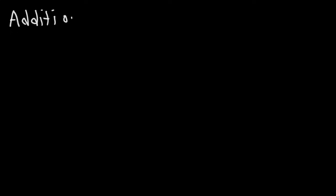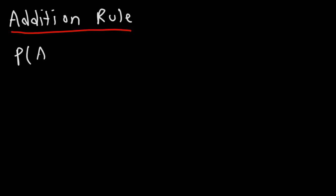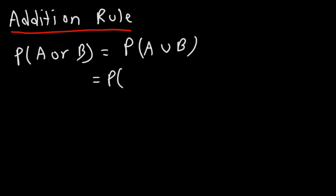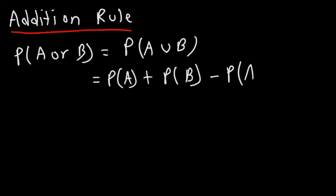Now we're going to talk about two basic rules of probability. The first one is sometimes referred to as the addition rule. The probability of getting event A or event B can be written as the probability of A in union with B. This is equal to the probability of event A occurring plus the probability of event B occurring minus the probability of event A and event B occurring together.